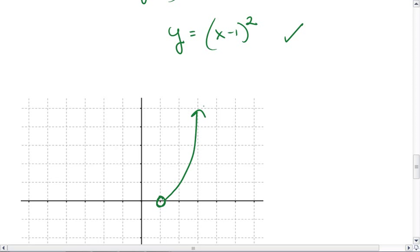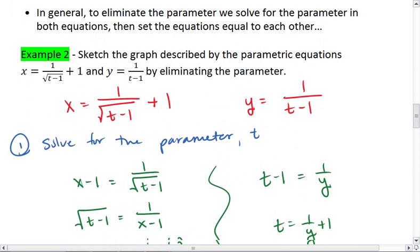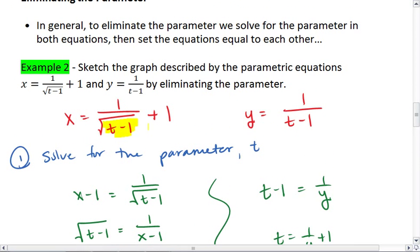Now I know this doesn't look quite like the parabola you were expecting. You expected this hole to be filled in and to open on the other side as well. But I want you to look above at our original equation. We see that we have a radical sign with t minus 1, and we also have a denominator with t minus 1, which means that t must be greater than 1.